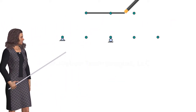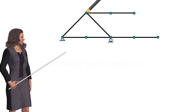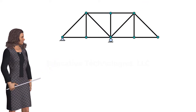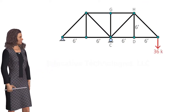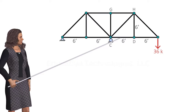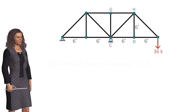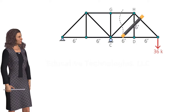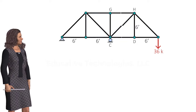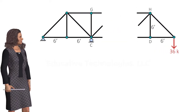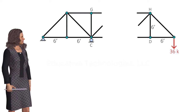Consider this statically determinate truss. Suppose we want to calculate the force in member CD only, without analyzing the entire structure. We can do this by cutting through a few truss members in order to split the structure into two parts. When we cut a truss member, we expose its internal force.